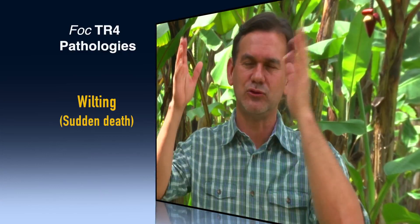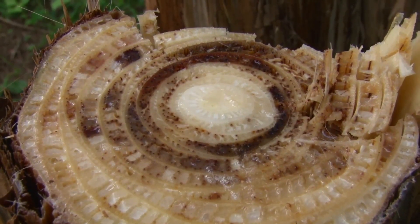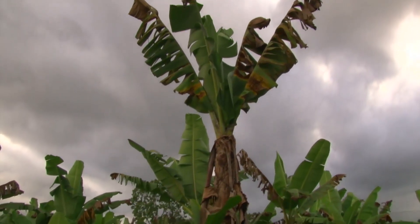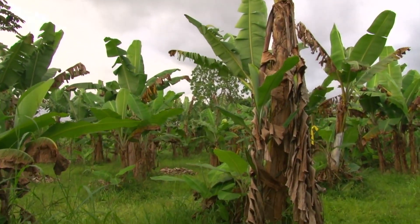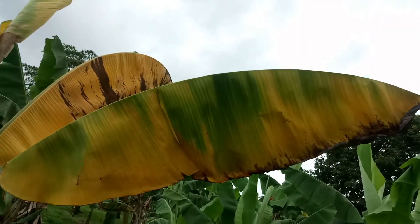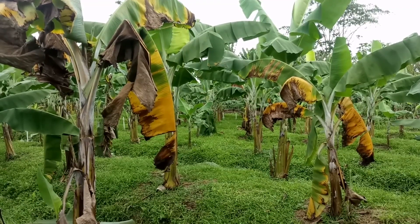Fusarium wilt has two pathologies. The main pathology is what gives the name to the disease: wilting. The pathogen in the soil enters through the roots and vascularly invades the entire plant. It blocks the vascular tissue, and the plant begins to show characteristic pathologies. By obstructing the vascular tissues, the translocation of water and nutrients to the upper part of the plant is affected. The leaves begin to lose turgidity, become chlorotic, bend, and subsequently become necrotic.